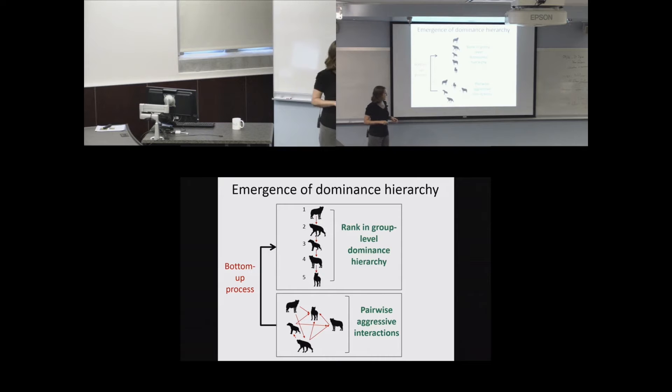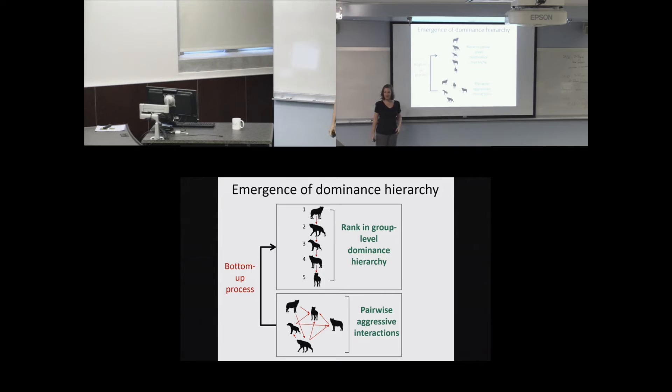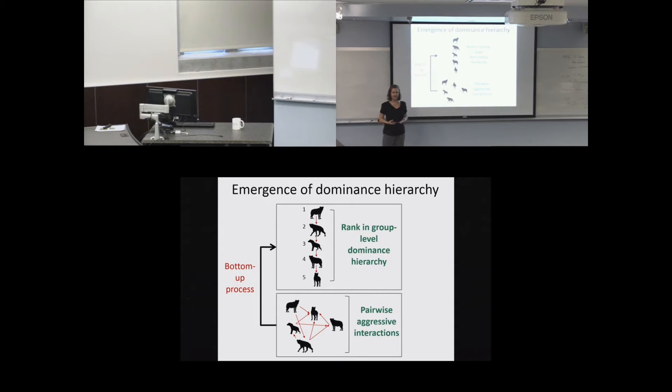This is really interesting because these pairwise aggressive interactions are sometimes difficult to map into a group-level dominance hierarchy. In the toy example here we just have five individuals with only a few interactions between them. But from personal experience, it's really hard to actually map out the ranks of individuals in a more complex group. I did a little experiment on myself to see how hard it would be to order individuals in a moderately large group of about 20 into a dominance hierarchy with rank.